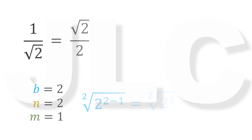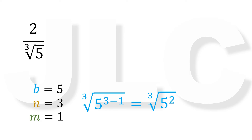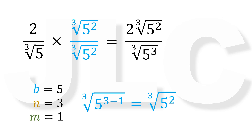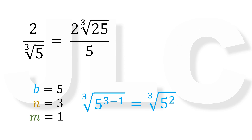As another example, if we have 2 over cube root of 5, then b equals 5, n equals 3, and m equals 1. So we multiply the numerator and denominator by cube root of 5 raised to 3 minus 1, equals cube root of 5 squared. So we have 2 over cube root of 5 times cube root of 5 squared over cube root of 5 squared, equals 2 times cube root of 5 squared over cube root of 5 cubed, equals 2 times cube root of 25 over 5. Therefore, 2 over cube root of 5 is equal to 2 times cube root of 25 over 5.